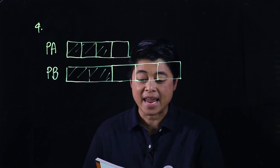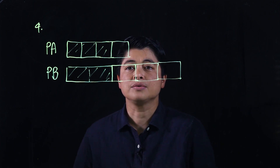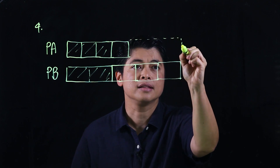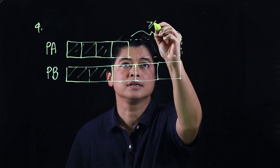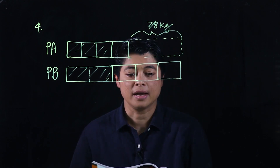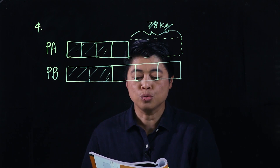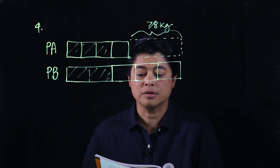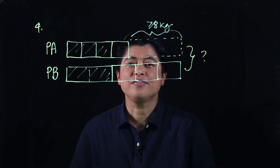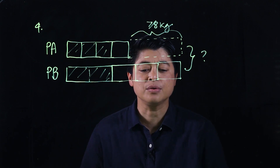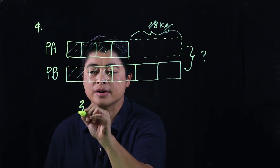Parcel A is seven-eighths of a kilogram lighter than parcel B. So the difference between the two bar models is seven-eighths kilograms. We need to find the total mass of both parcels and express it as a mixed number.